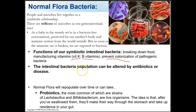Our intestinal bacteria population can be altered by antibiotics or disease, but if altered, it will repopulate over time because there are so many bacteria in the environment. We can also speed up repopulation of our normal flora by taking probiotics. Most probiotics are strains of bacteria — Lactobacillus is one of them. The idea is that after swallowing them, they make their way through the stomach and take up residence in your intestines.